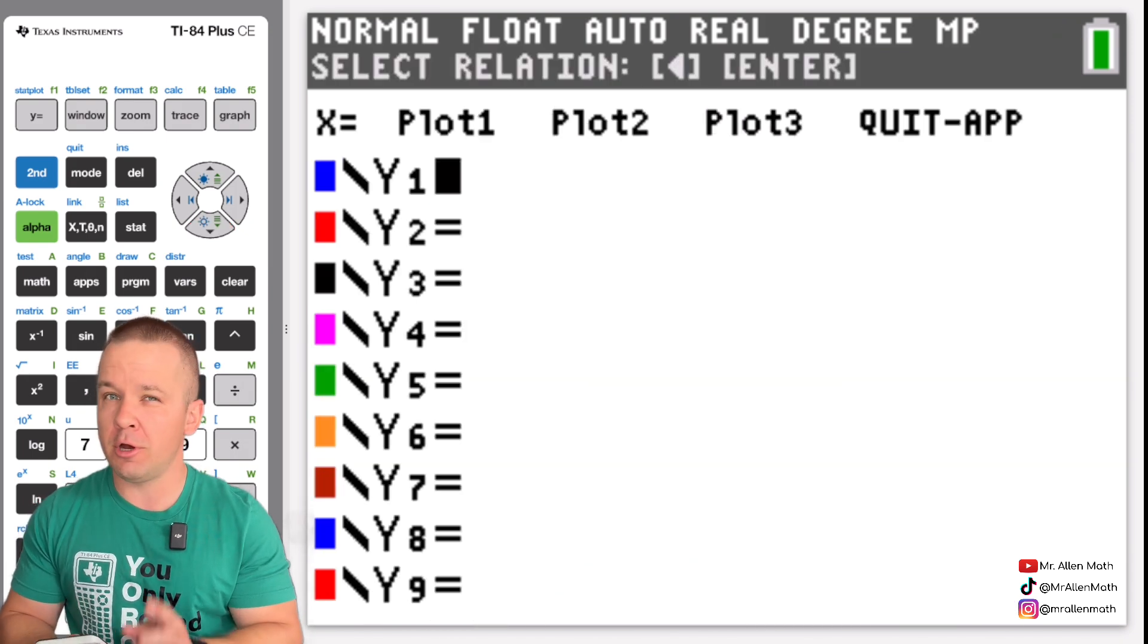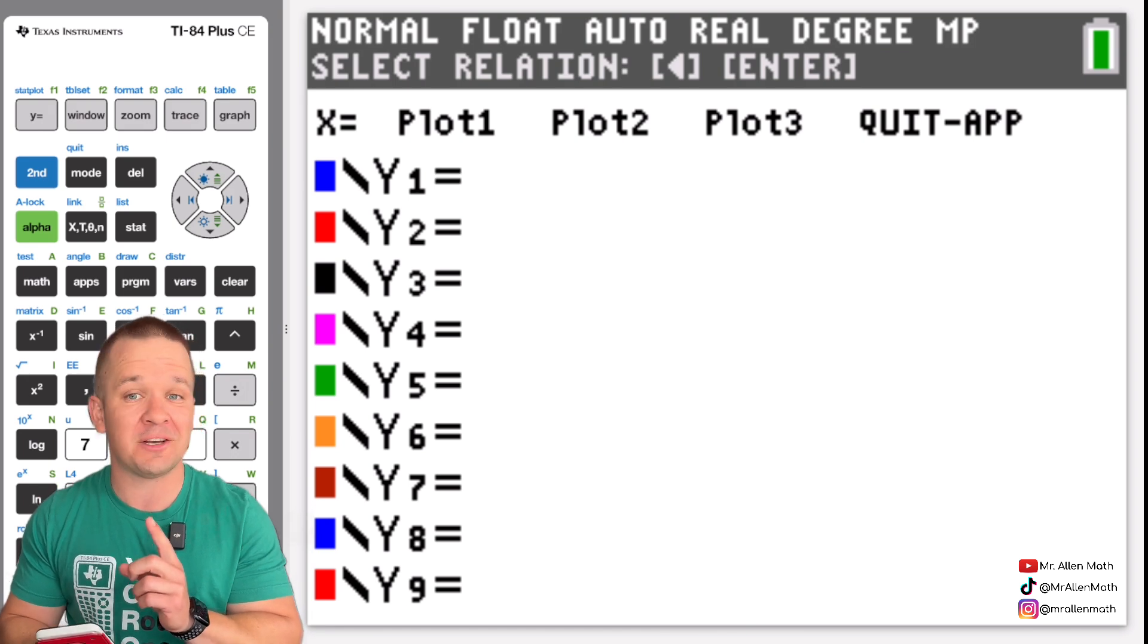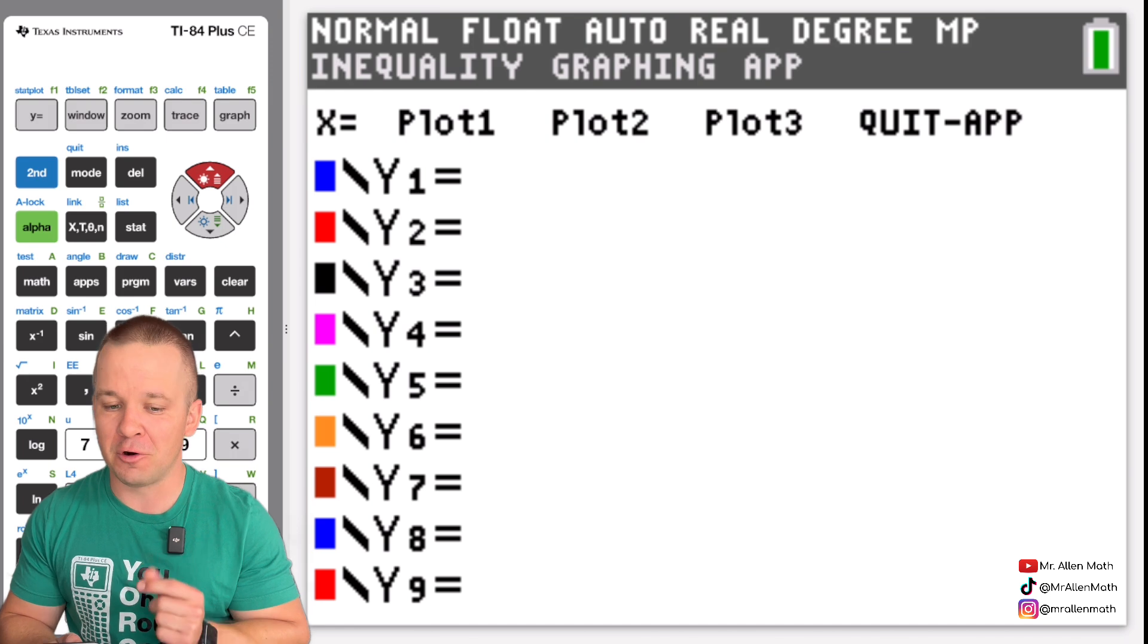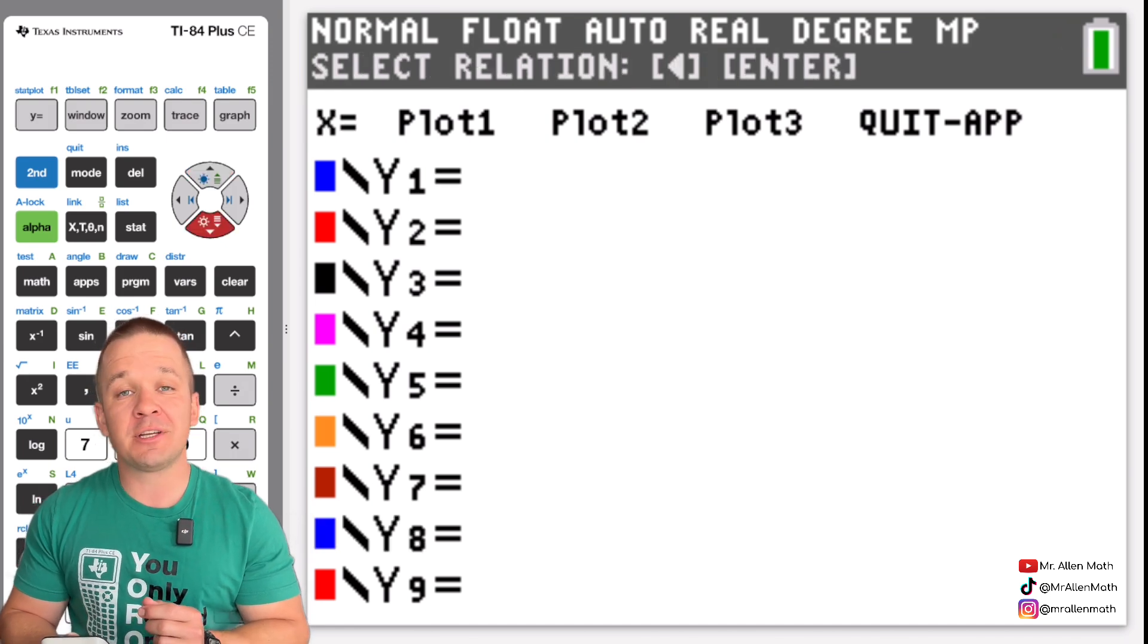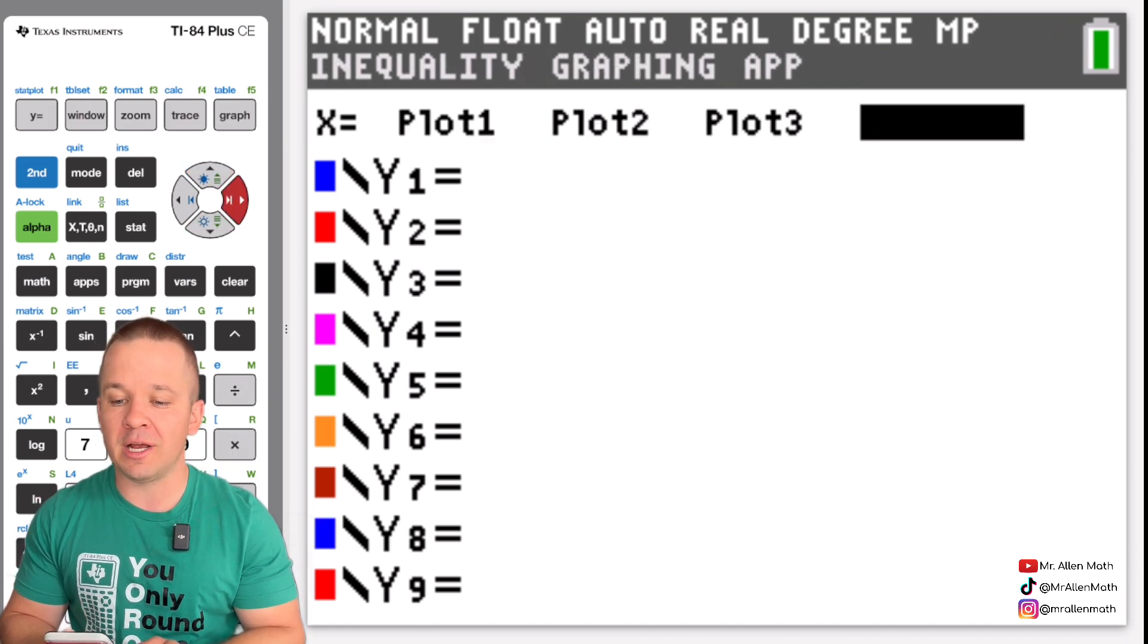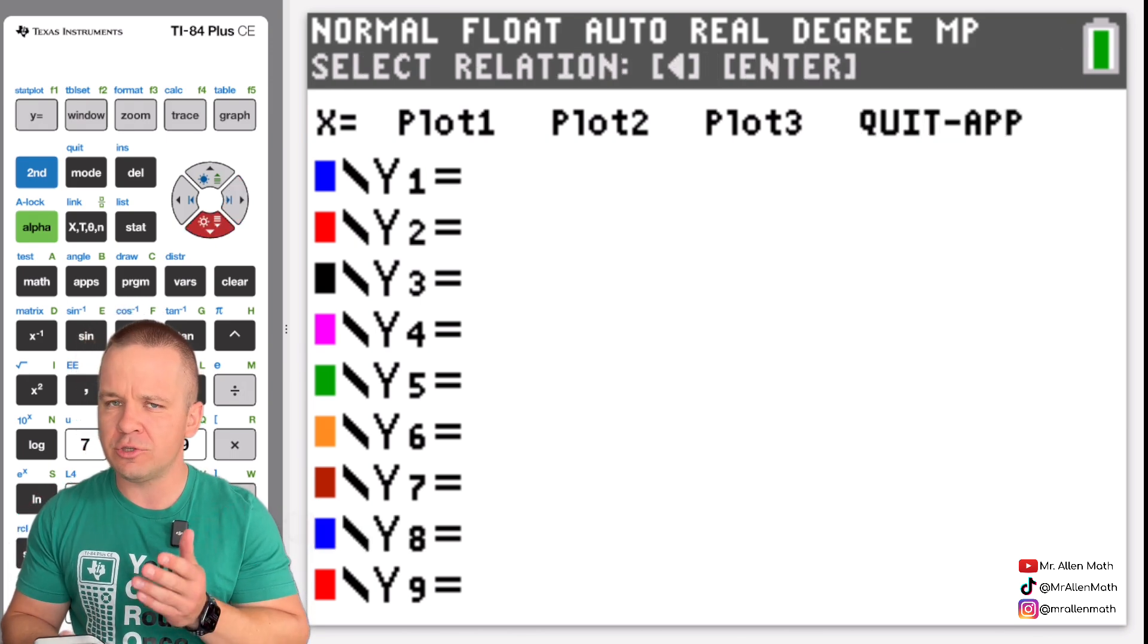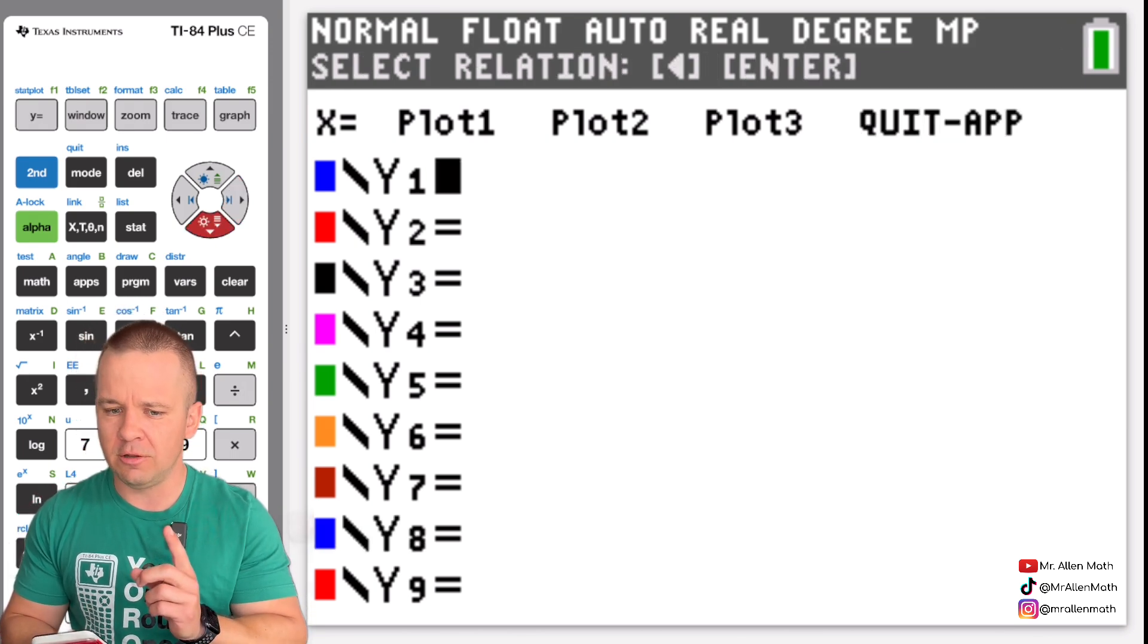And when we go to our y equals here you're going to notice one thing real quick is that there's an x equals up in the top right. Yes, you can graph vertical lines in this mode. You're also going to see the quit app option. We'll do that at the very end of the video but we don't see any inequalities just yet. So let's take a look here.